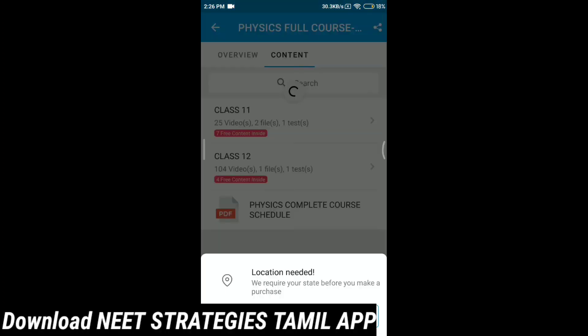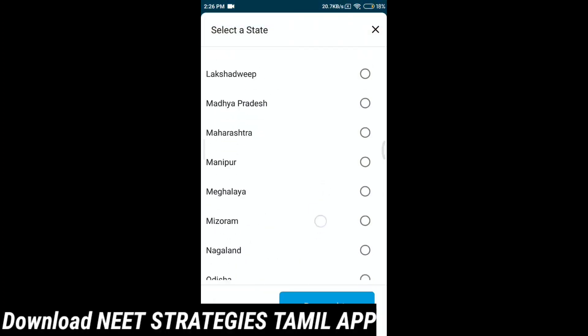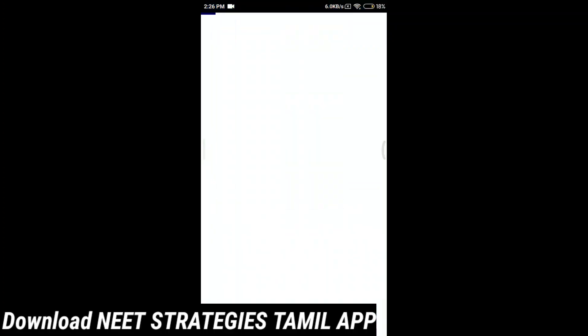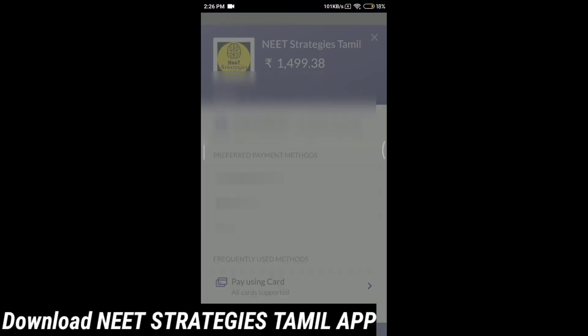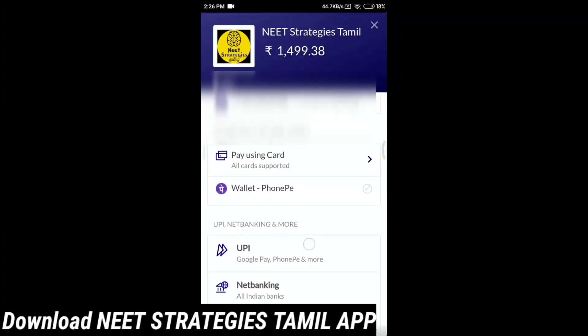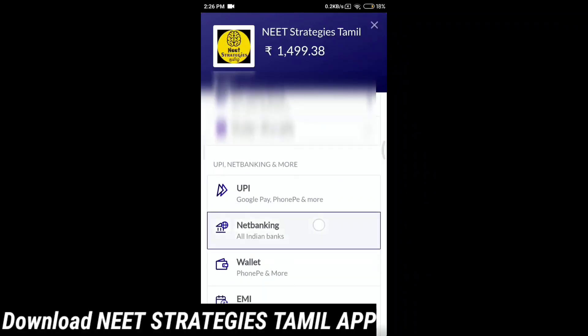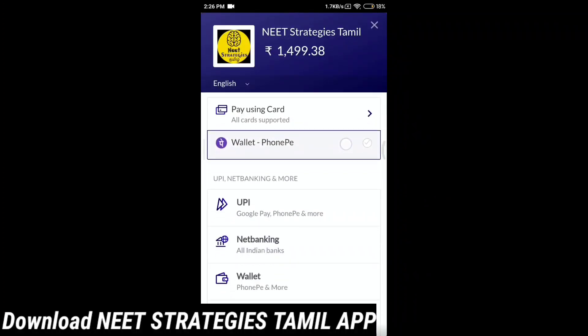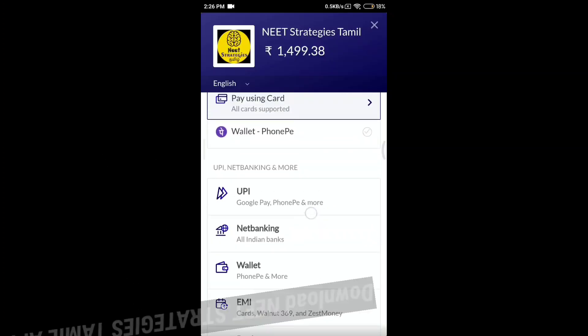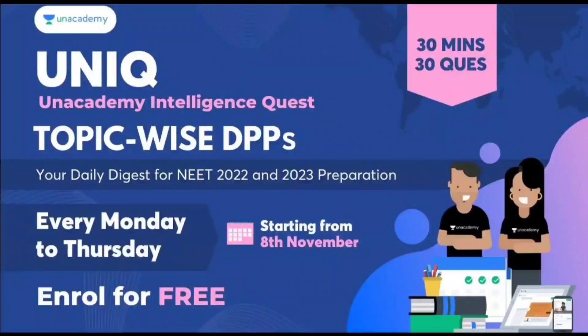If you buy, you can click on the location, scroll down to the state, proceed to payment. Pay using card, phone pay, wallet amount, UPI, Google pay, net banking, everything is accepted. If you have any difficulty or doubt, you can click on the chat section. Here at Unacademy, they have started Unacademy Intelligent Quest topic wise DPPs exclusively for NEET 2022 and 2023.